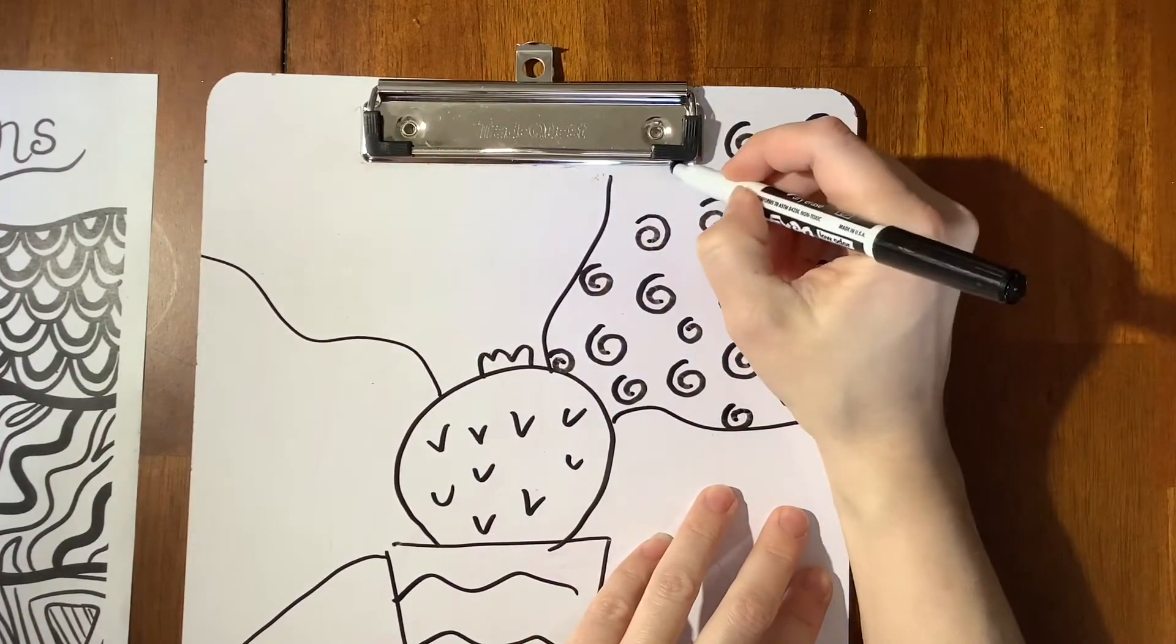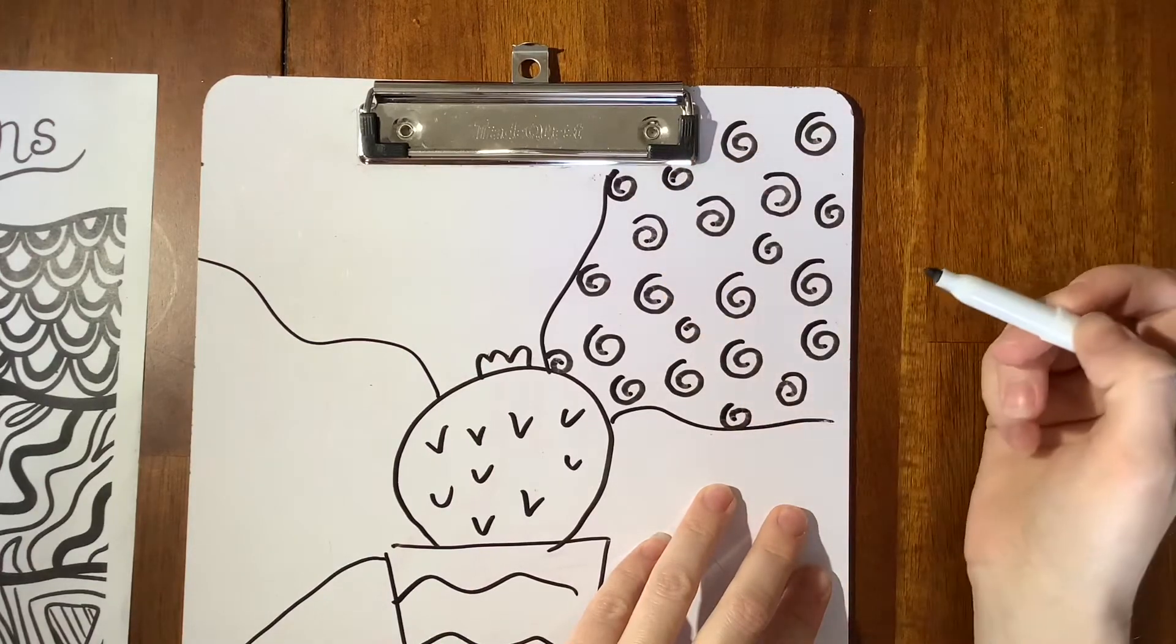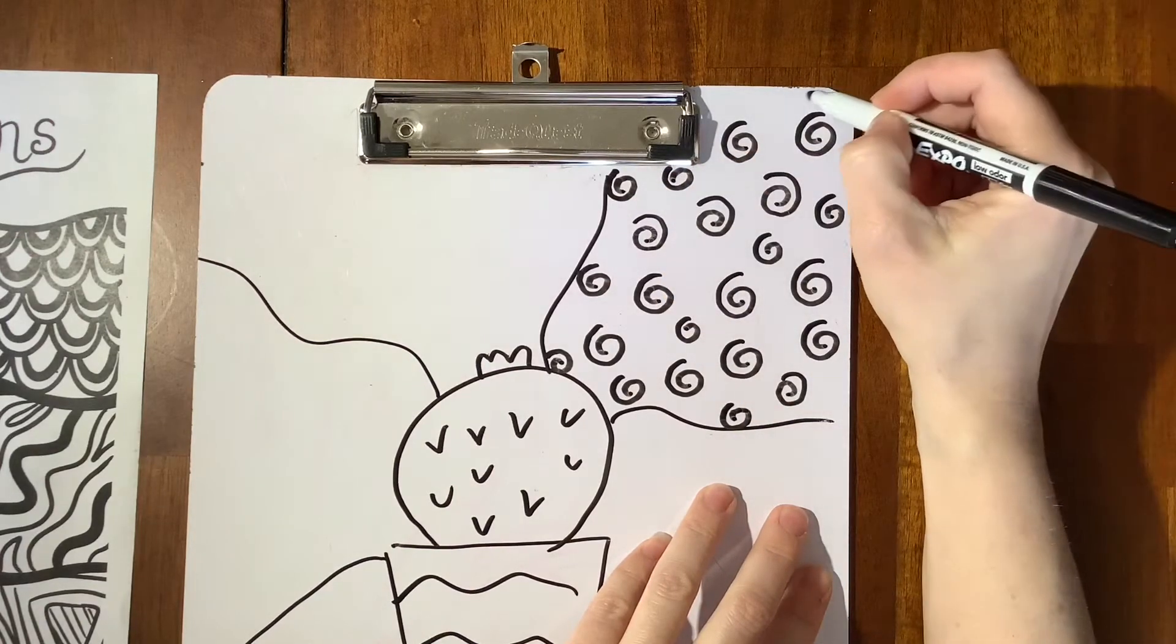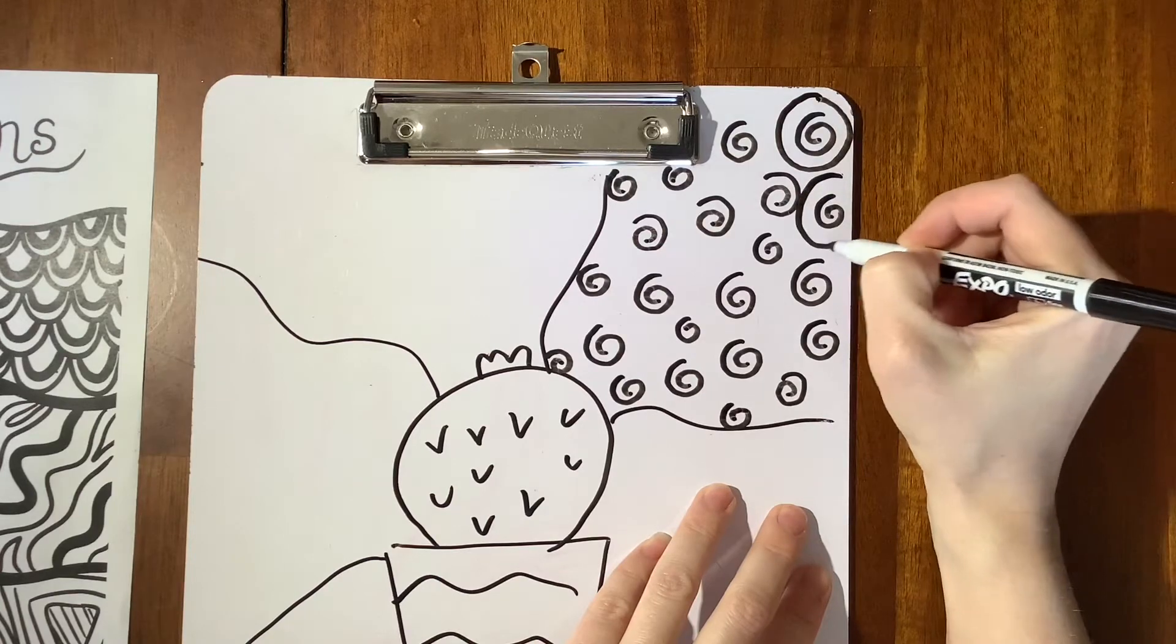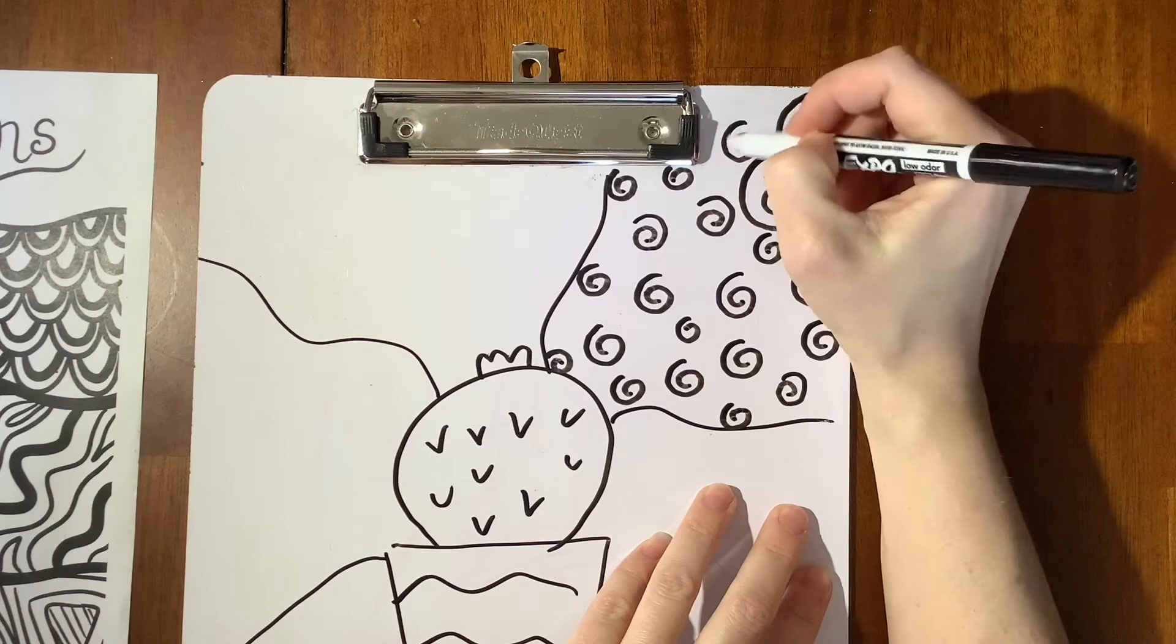So now that I have my swirls, I'm going to go ahead and make a circle around the swirl. Make my cinnamon roll and some of those circles are going to be behind one another.